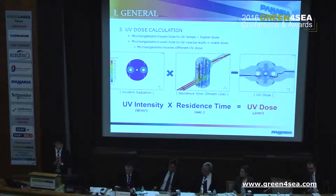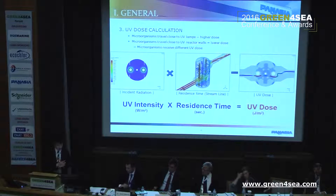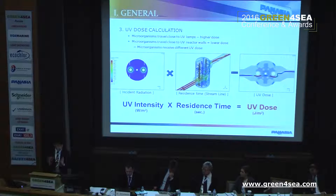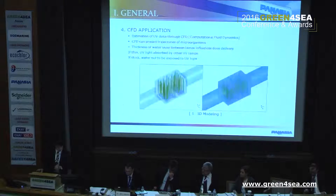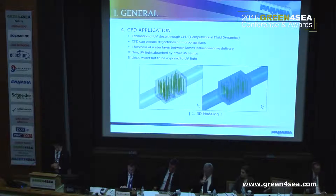You need to understand that there are a variety of cases for microorganisms passing through the UV reactor. Some microorganisms can travel close to the UV lamp, receiving a higher UV dose, but others can travel close to the UV reactor walls — very far from the UV lamp — receiving a lower dose. So every microorganism can receive a different amount of UV dose. In order to estimate UV performance and improve it, we generally use CFD modeling — computational fluid dynamics — and CFD helps us predict the trajectories of microorganisms inside the UV reactor.